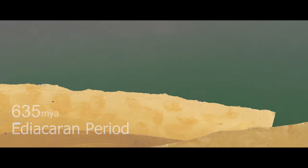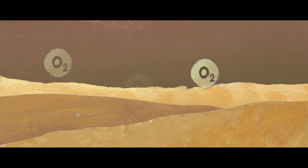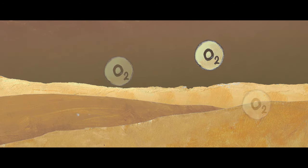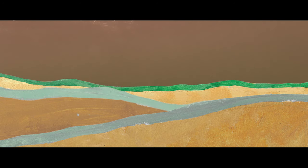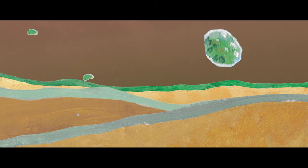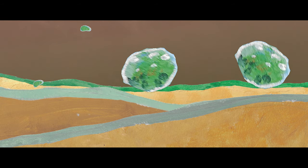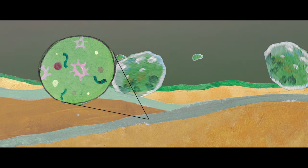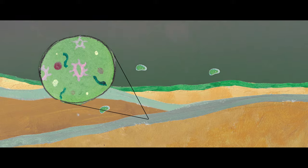An interval of time in Earth's distant past, known as the Ediacaran period, began 635 million years ago. During this time, the oceans were murky, with much lower oxygen levels, and the sea floor was carpeted by gelatinous microbial mats. The oceans were dominated by cyanobacteria and strange small multicellular organisms, which were beginning to appear for the very first time.